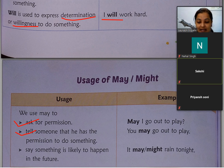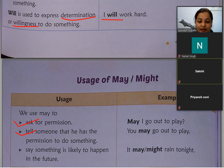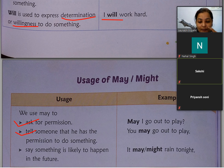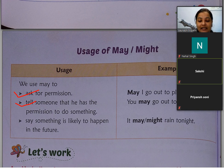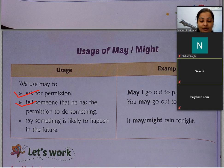Tell someone that he has the permission to do something — किसी को बताना कि आपको permission है। जैसे: 'May I go out to play?' पूछने पर: 'You may go out to play।' अगर आप अपनी mother से पूछें तो allowance में 'You may' से शुरू होगा। Say something is likely to happen in the future — future में होने की possibility हो तो may या might लगाते हैं। जैसे: 'It may rain tonight' या 'It might rain tonight' — यह guess कर रहे हैं। May या might का use sentence के according करते हैं।